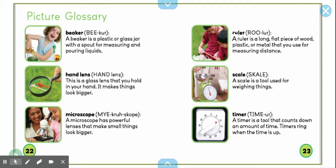Ruler. A ruler is a long, flat piece of wood, plastic, or metal that you use for measuring distance.